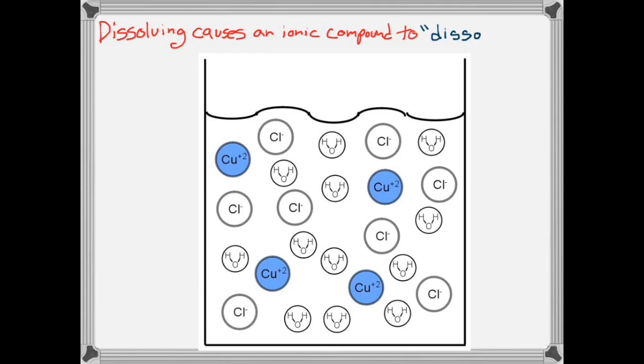Dissolving causes an ionic compound to dissociate, which means to break apart into its constituent ions. So we now have a bunch of copper ions and a bunch of chloride ions swimming around in the water. The water that was embedded in the copper chloride crystal will just add to the rest of the water.